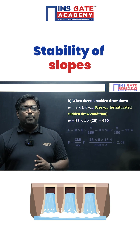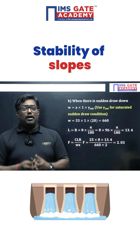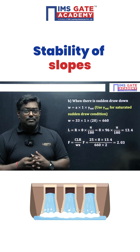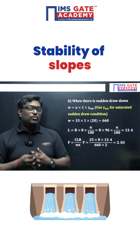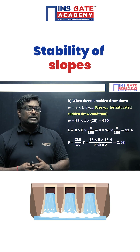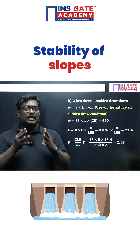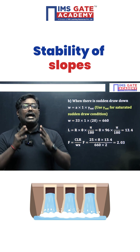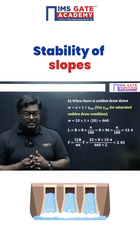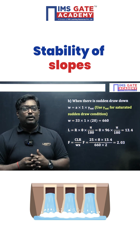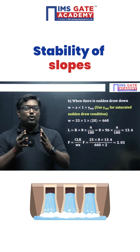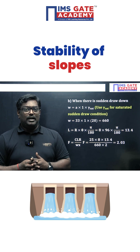Plugging in the values into the same formula — factor of safety equals resisting moment upon driving moment — where resisting moment is due to cohesion and driving moment is due to self-weight, and substituting all values: length of the arc, cohesion, radius, weight, and CG distance, you will get the factor of safety as 2.03.